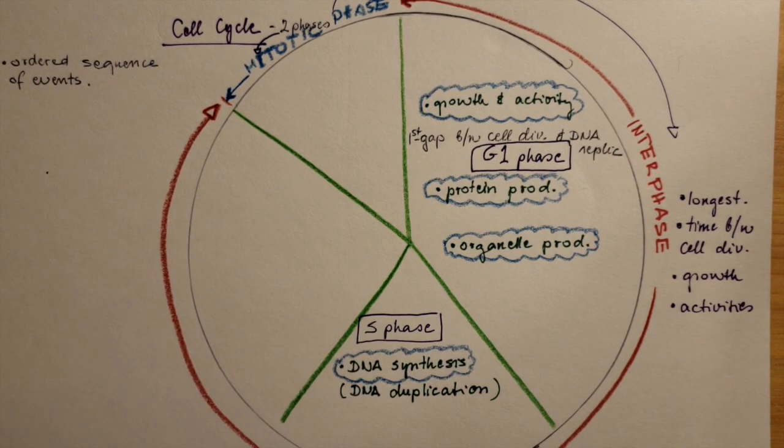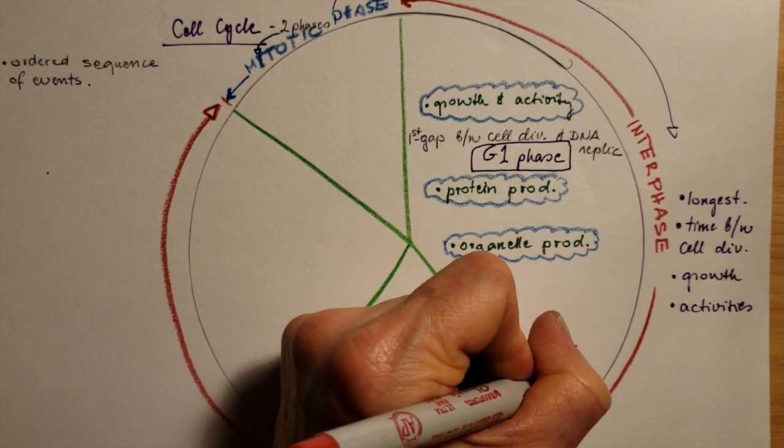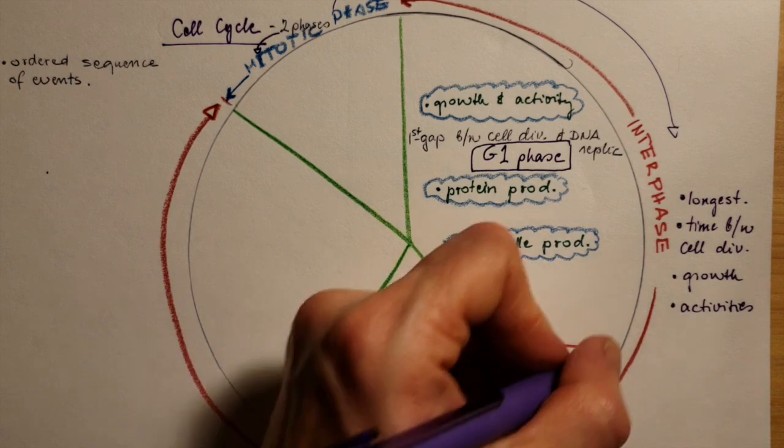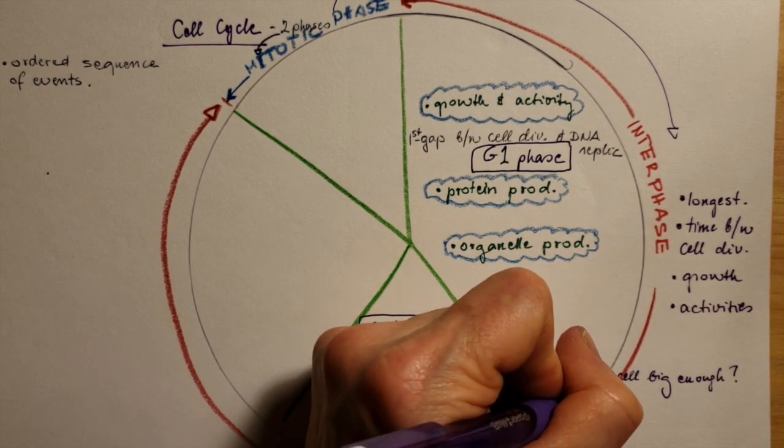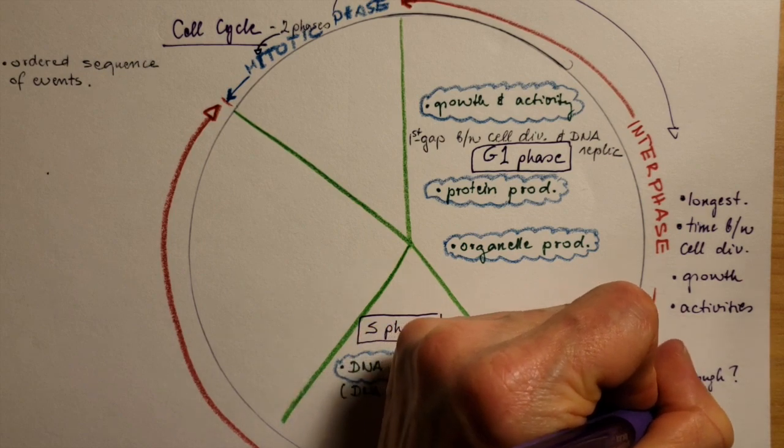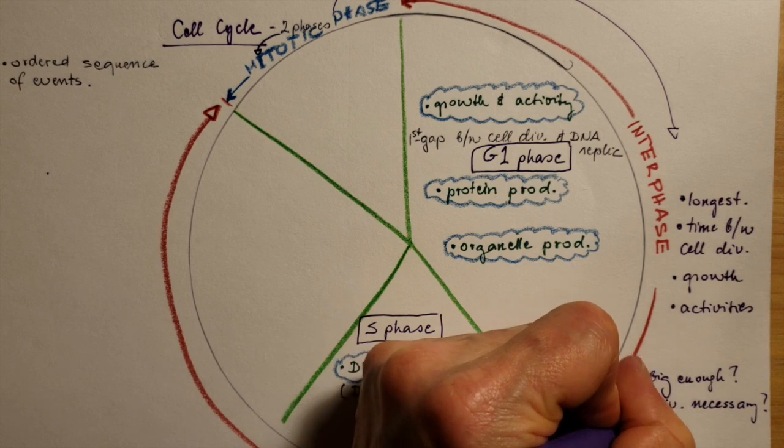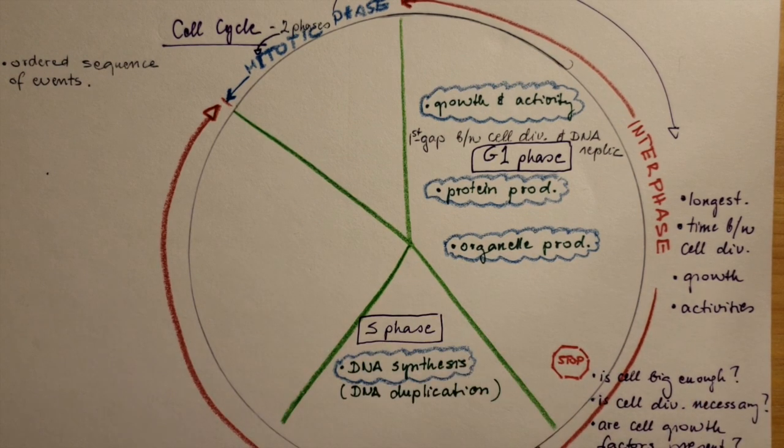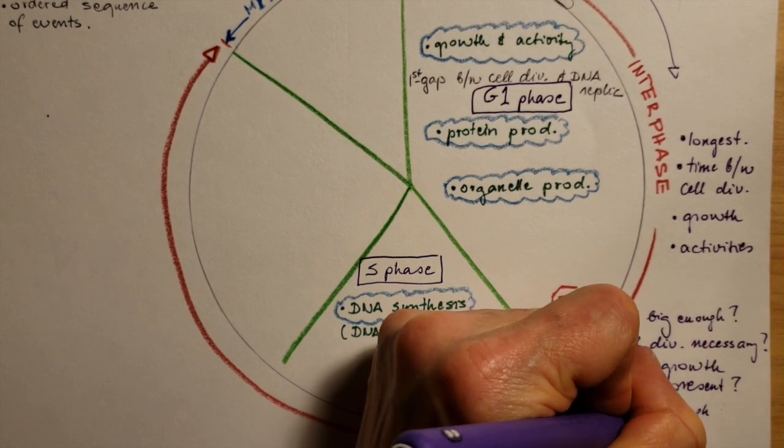The border between G1 phase and S phase is stopped by a stop sign, a virtual stop sign. But really the cell needs to answer those questions like, is the cell big enough, is there enough to go into cell DNA synthesis and eventually to cell division? Is the cell division necessary for the cell? Are cell growth factors present as well as is there enough nutrients in the surroundings for the cell in order to divide?